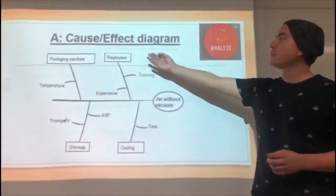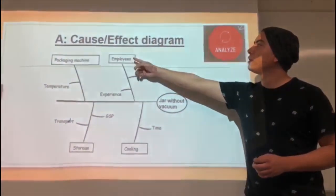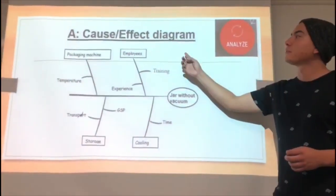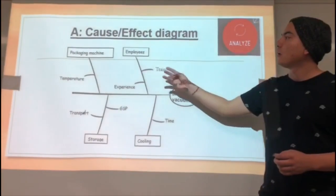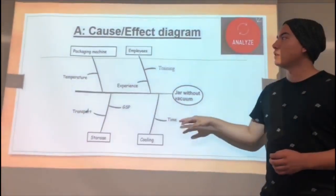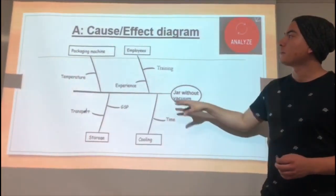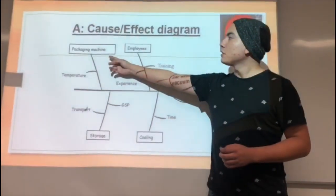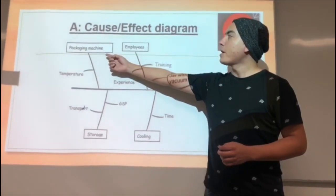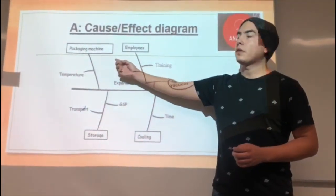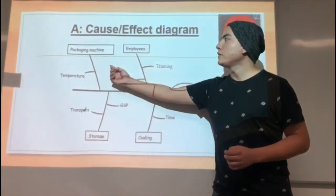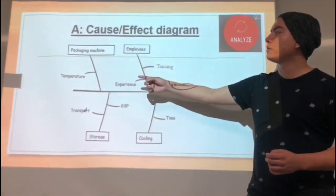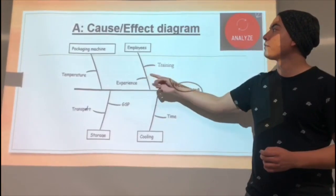The third point is the cause and effect diagram. We have four points in this part. The first point is the packaging machine, which is caused by low temperature.